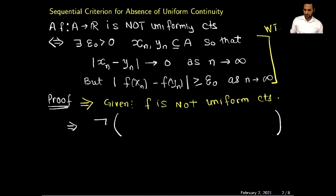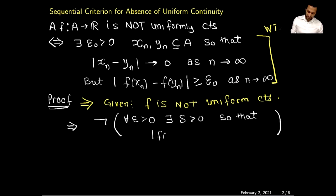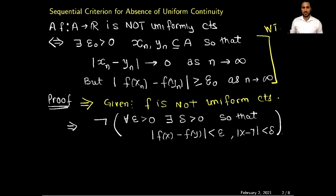If a function is uniformly continuous, it means for all epsilon positive there exists delta which is also positive, so that the difference between f of x and f of y is less than epsilon when x minus y is less than delta. This is the definition of uniform continuity. Now I write the negation of that statement.